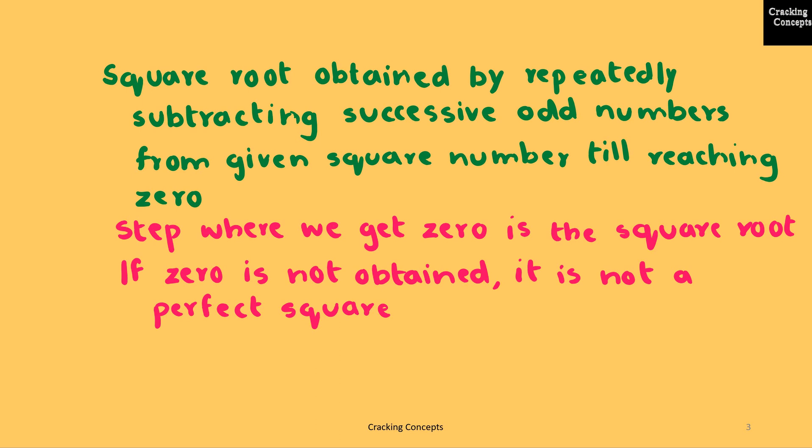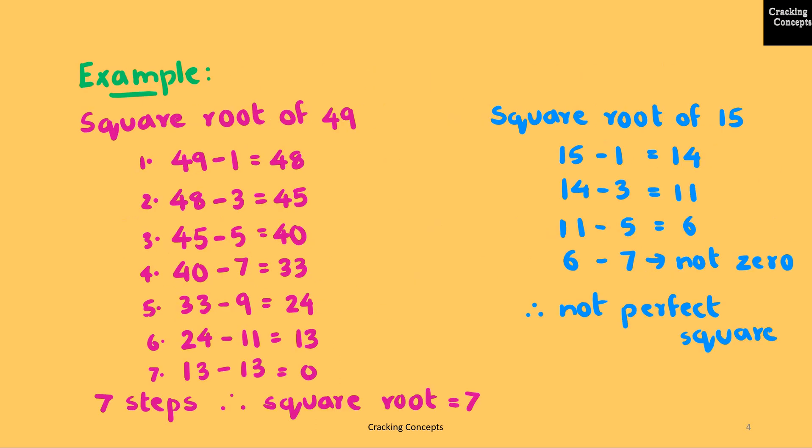The step where we get 0 is the square root. If 0 is not obtained, then the number is not a perfect square. We'll see an example of how this technique is used to calculate the square root of 49 and 15.